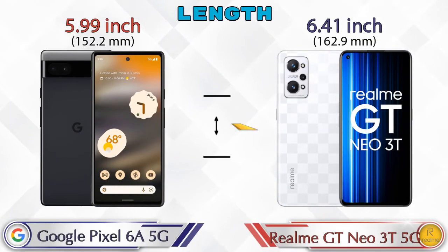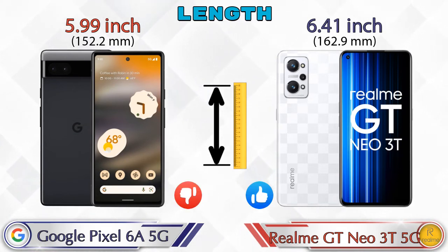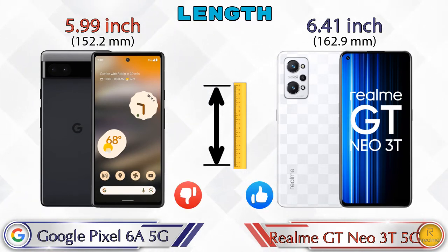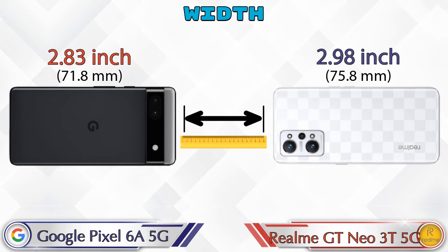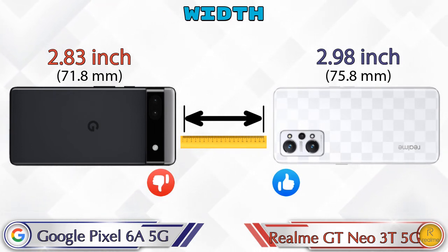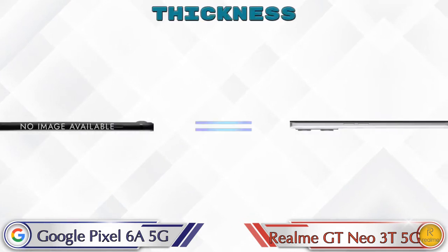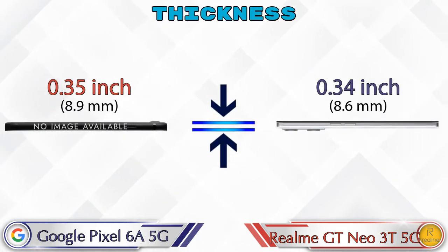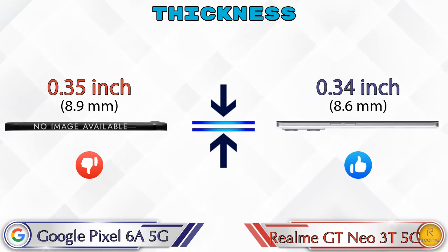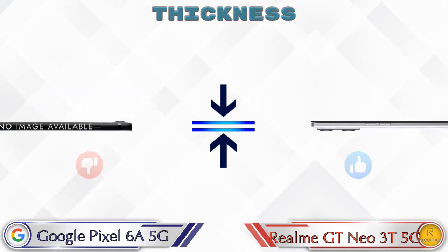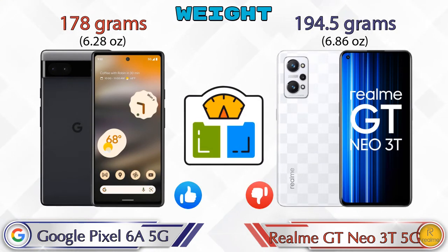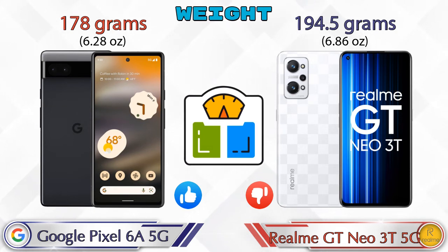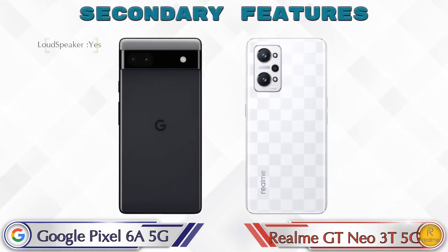Talking about dimensions: Pixel 6a 5G has a length of 5.99 inches and GT Neo 3T 5G is 6.41 inches. Width: Pixel 6a 5G is 2.83 inches and GT Neo 3T 5G is 2.98 inches. Thickness: Pixel 6a 5G is 0.35 inches and GT Neo 3T 5G is 0.34 inches. Weight: Pixel 6a 5G is 178 grams and GT Neo 3T 5G is 194.5 grams, which is heavier than the Pixel 6a 5G.